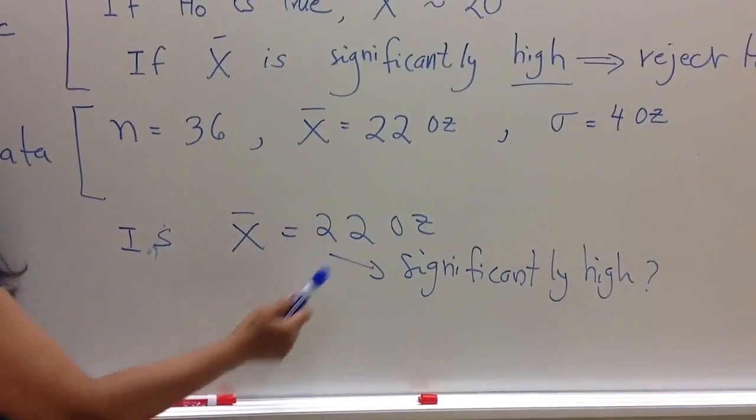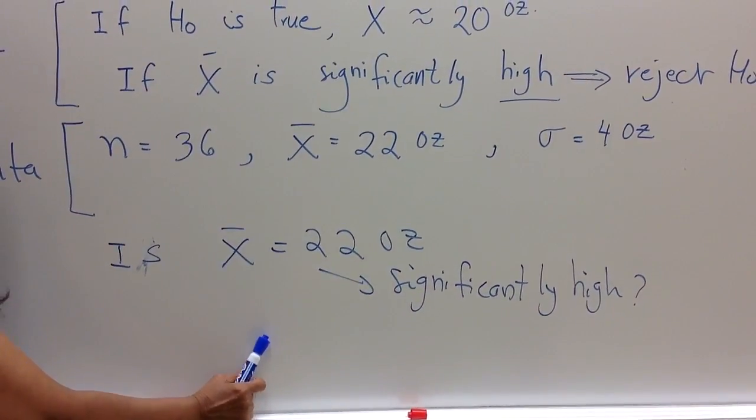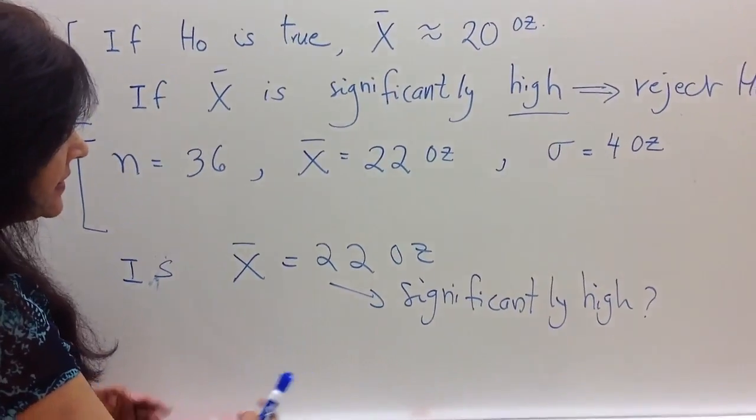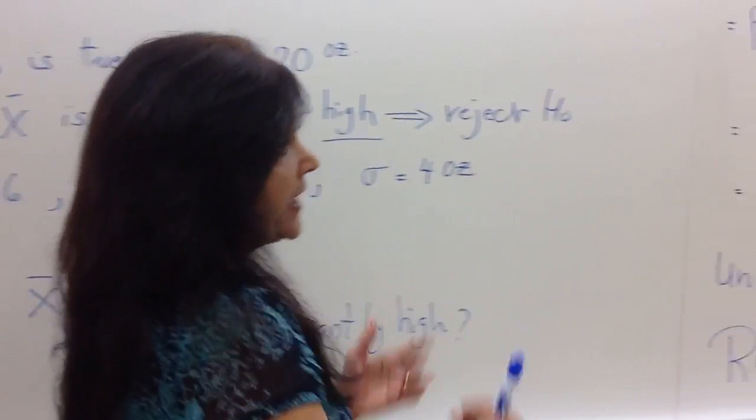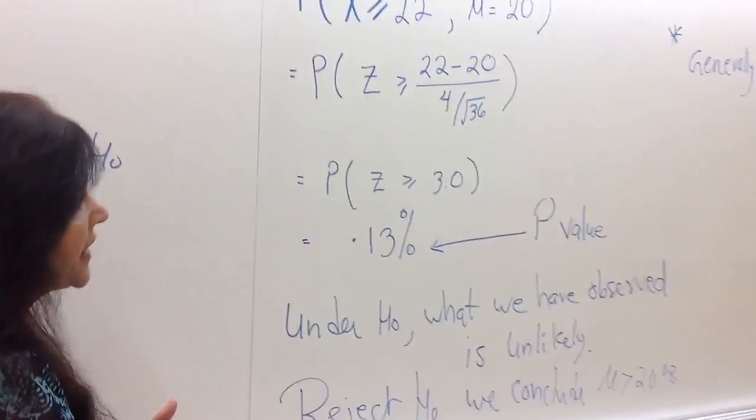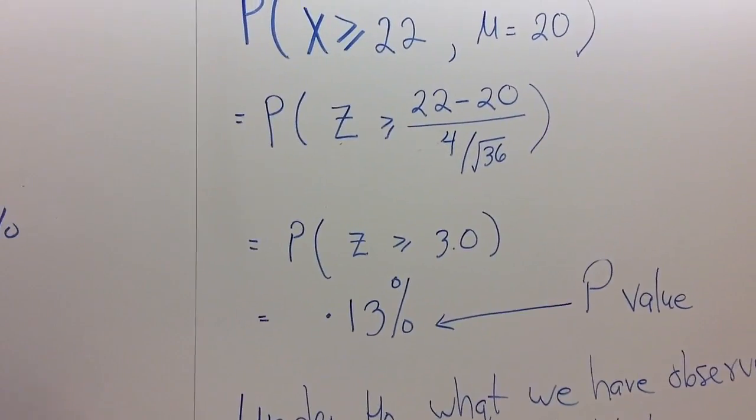Is X̄ significantly high? Well, how do we decide if it is significantly high? In statistics, we calculate the probability or the likelihood of the occurrence of an outcome.